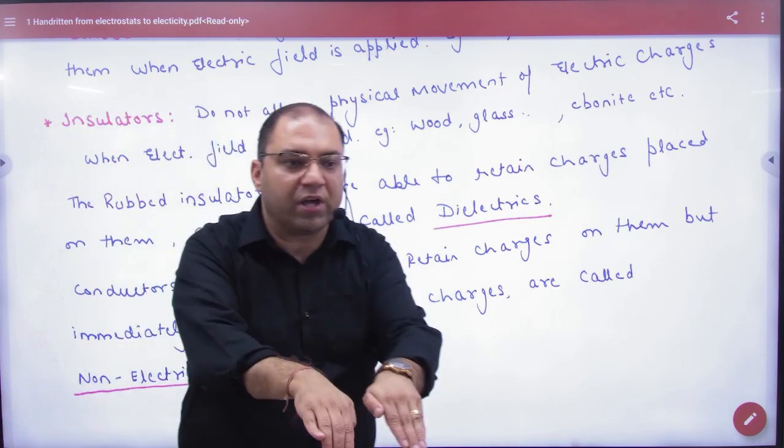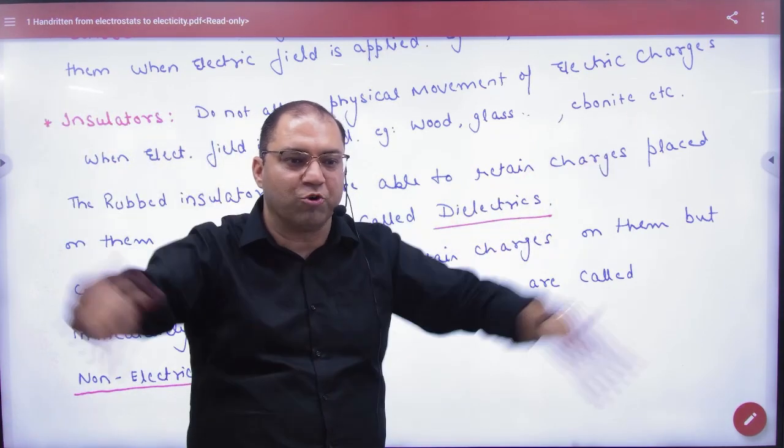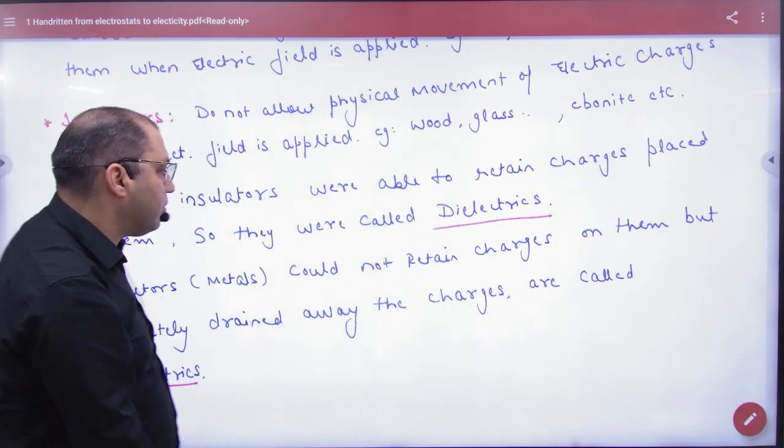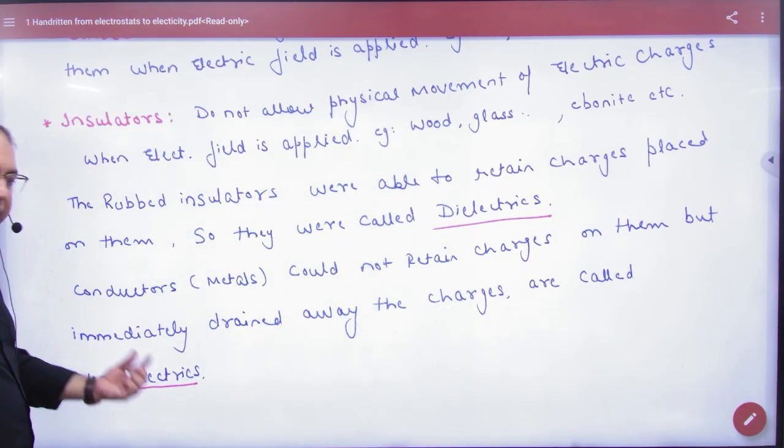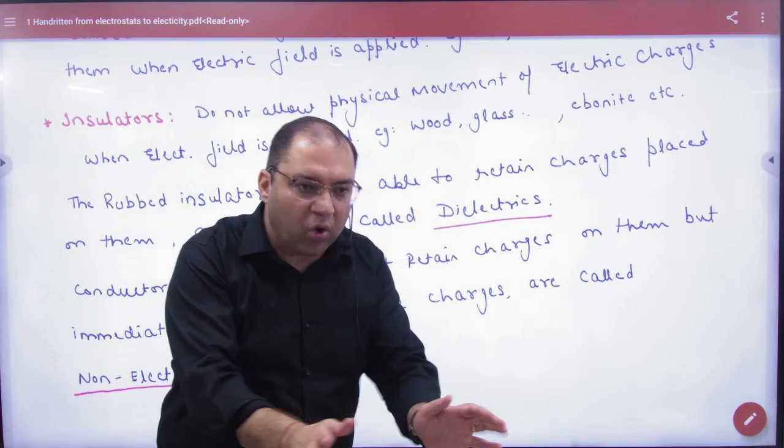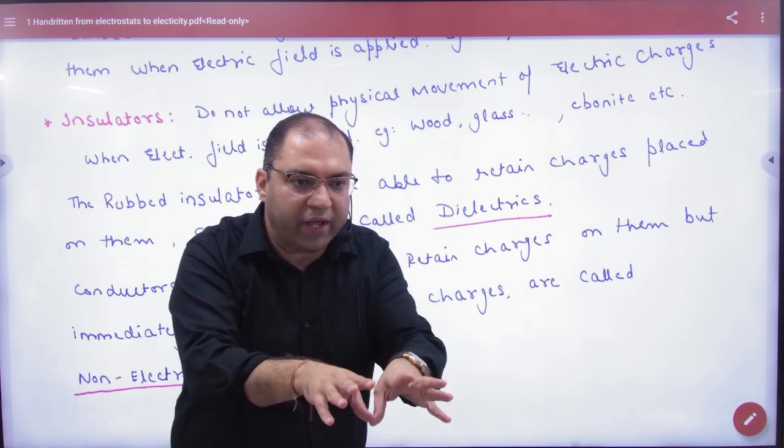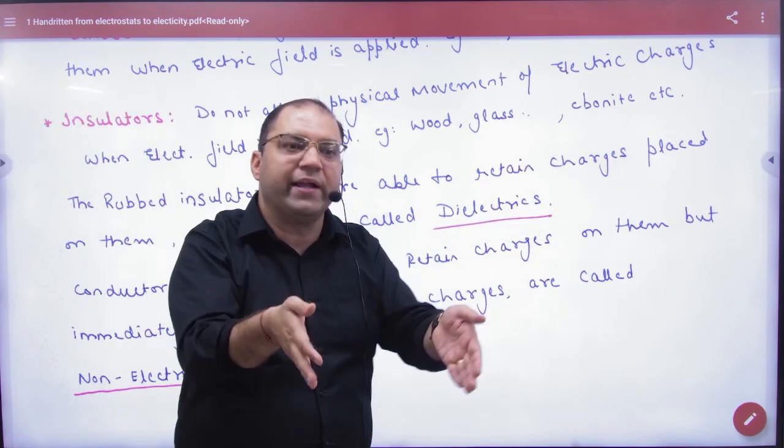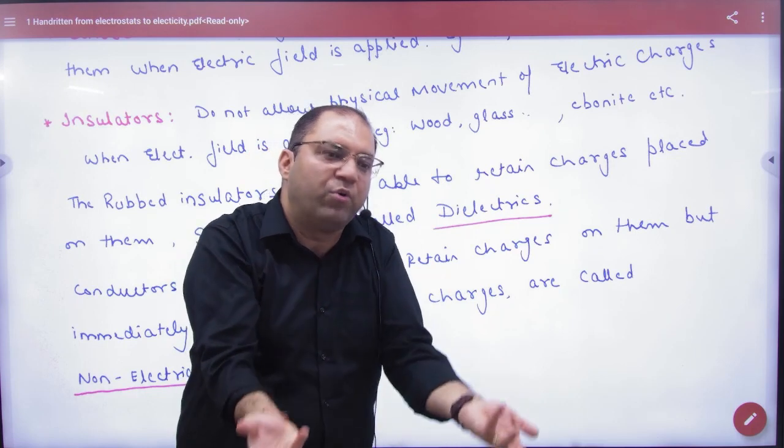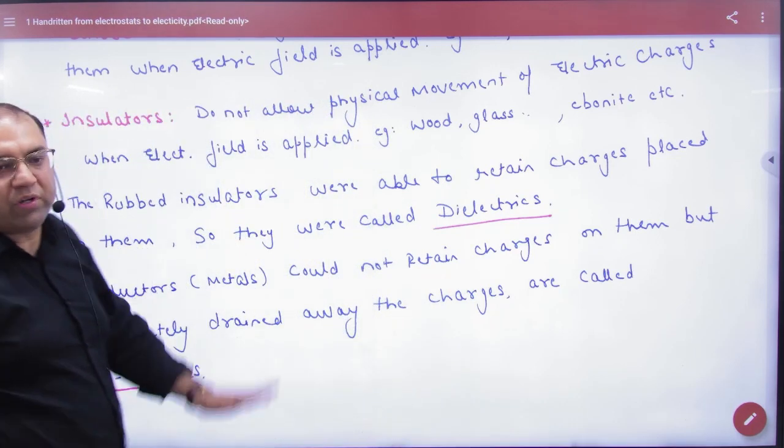But if you put charge in the inside of the conductor, then it will go out on the surface. Because the charge cannot stay in the inside of the conductor. So that's why conductors are called non-electrics. Non-electrics means not dielectric, so if you put charge inside, it will go to the outside. Dielectric charge inside, where you put charge, it will stay there, because it will not be allowed to move. Volume-wise distribution can be dielectric.